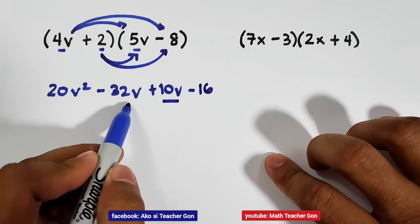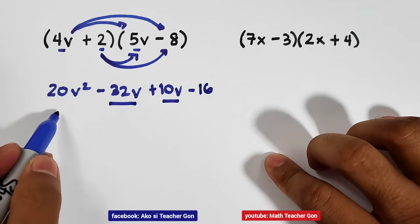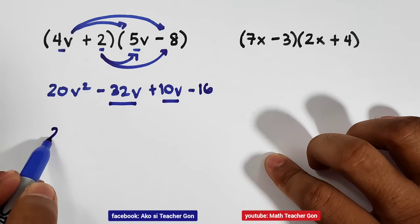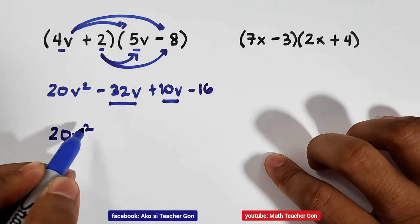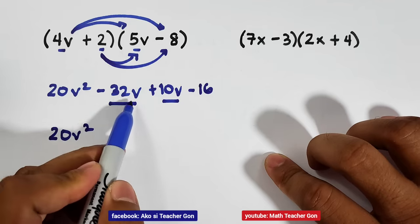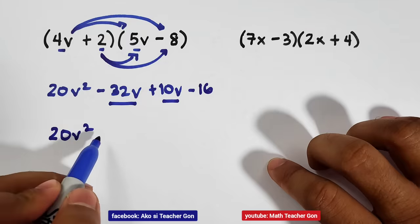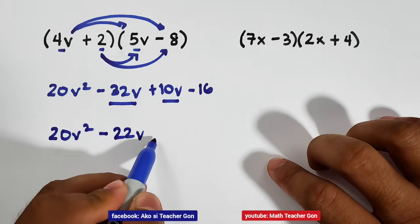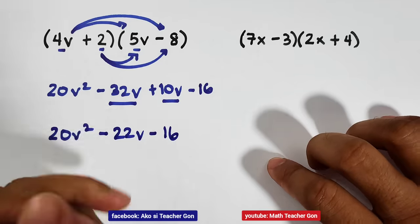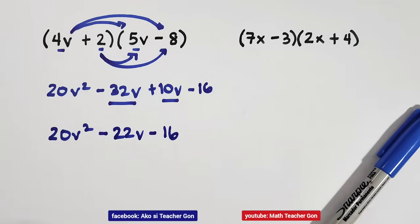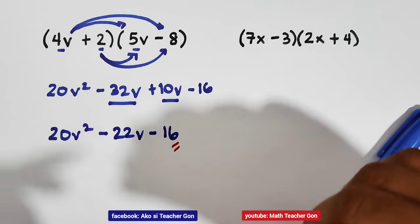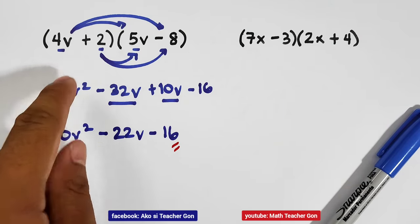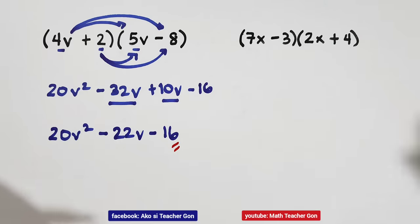Combine these two terms, guys, because they are like terms. Copy this one. 20v squared. Negative 32v plus 10v is definitely negative 22v. Then copy minus 16. And this is now the product of the binomials, 4v plus 2 times 5v minus 8.